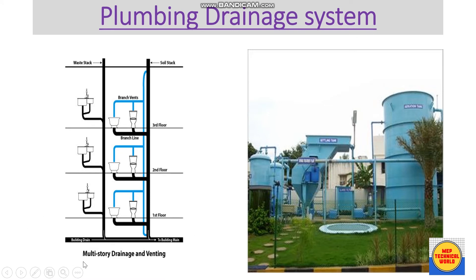Now coming to the plumbing drainage system — this is the basic overview of a multi-story drains and venting system. We have plumbing accessories like basin, bathtub, and WC seat. The black pipe is the waste line — one for the basin, another for the bathtub and WC. All this waste water and soil waste is drained through the drain pipe, which is connected to the sewage treatment plant, where waste water is filtered and reused for flushing or gardening.